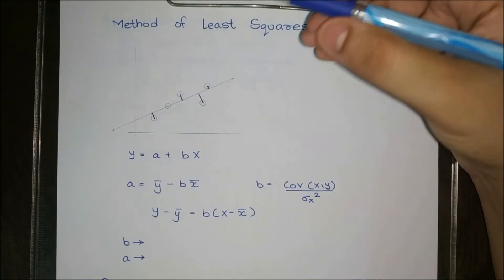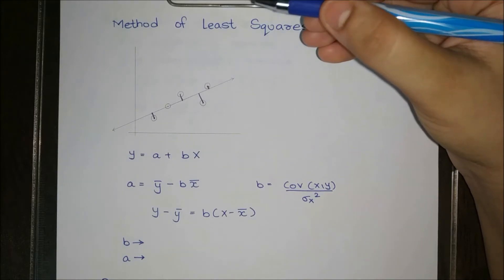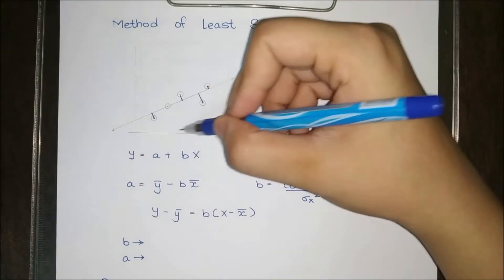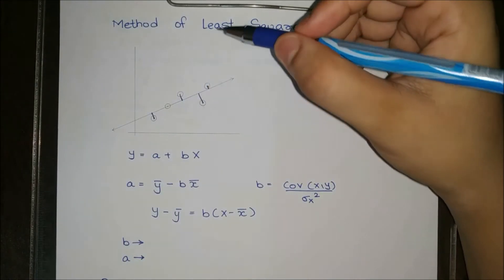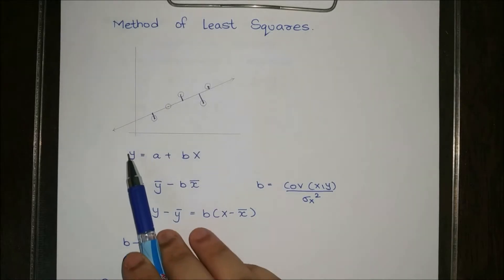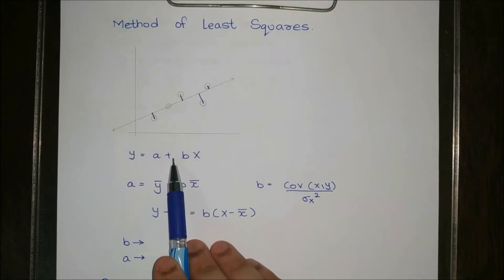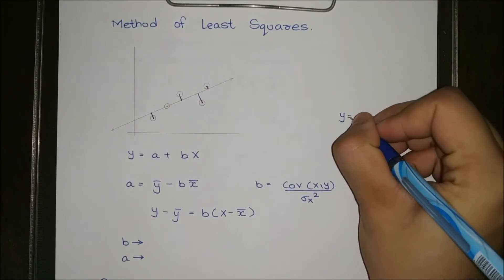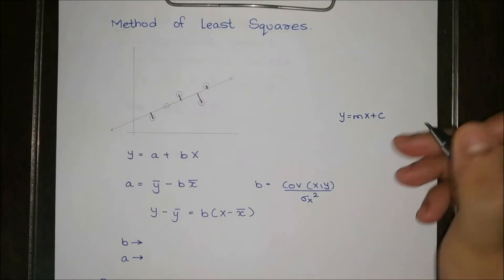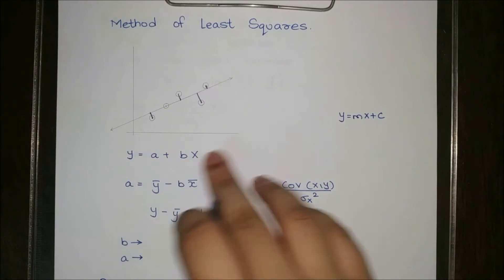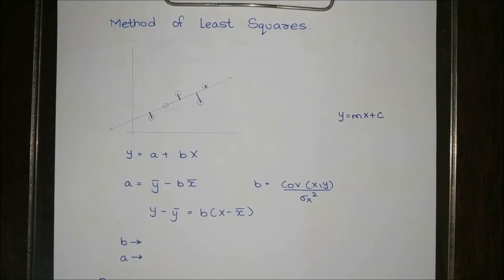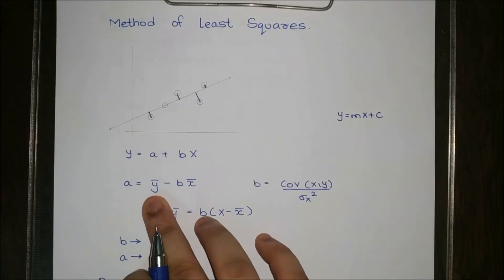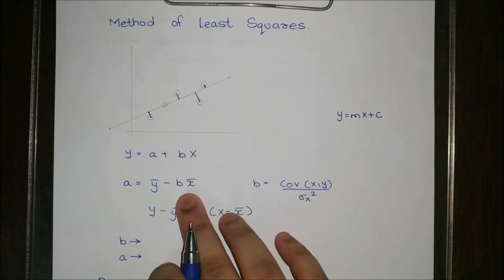In our syllabus, we go directly to the formulae. After applying the method of least squares, we get a line of the form y = a + bx. If you remember, any line is y = mx + c, where here m is b and c is a. The value of a is y-bar minus b·x-bar.